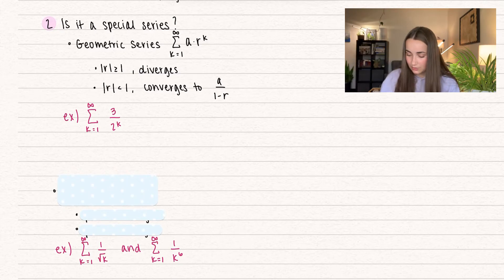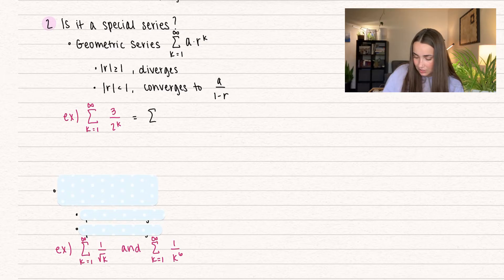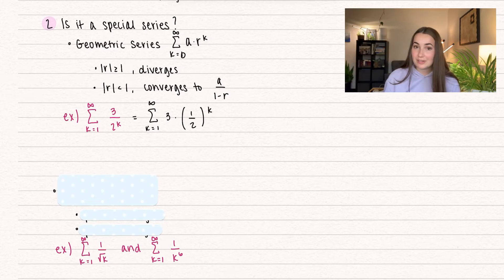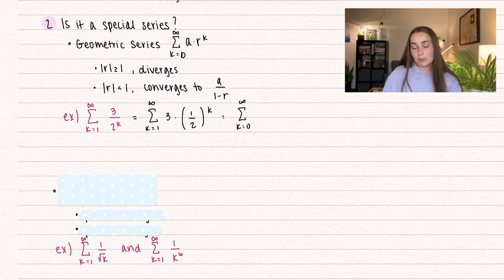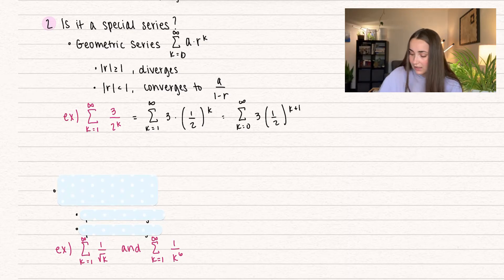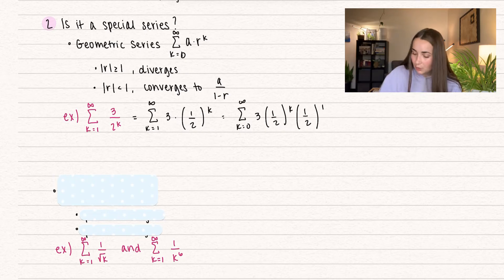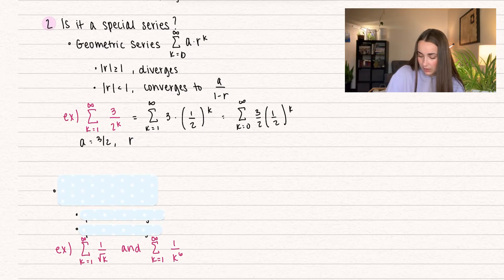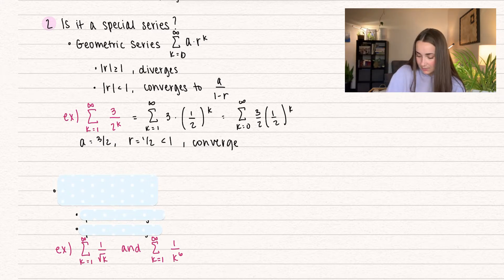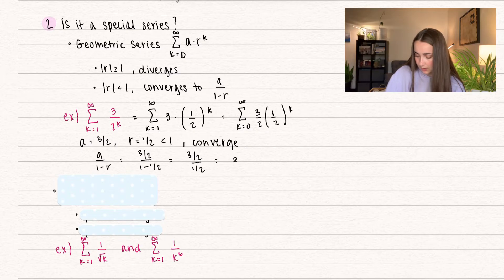Let's take the example: summation k equals one to infinity of three over two to the k. If I rewrite this, we have three times one over two to the power of k. A geometric series has to start at k equals zero, so we change the index. Subtracting one from the index means adding one to the exponent, so we get one half to the power of k plus one, which becomes one half to the k times one half. Combining three and one half gives a equals three halves, and the common ratio r equals one half. Since r is less than one, this converges, and it converges to a over one minus r — that's three halves divided by one half, which equals three.